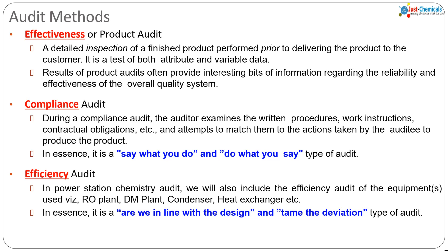Now we come to the last but most important aspect in power plant chemistry: efficiency audit. A chemistry department can be audited for its water treatment processes like clarification, filtration, reverse osmosis, ion exchangers, or electrodeionization. Even heat exchanger and condenser efficiencies can also be audited, as these are affected by the treatment qualities which the chemistry department maintains.